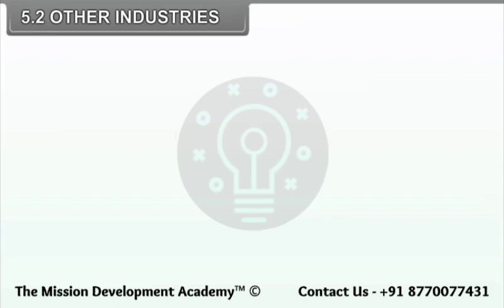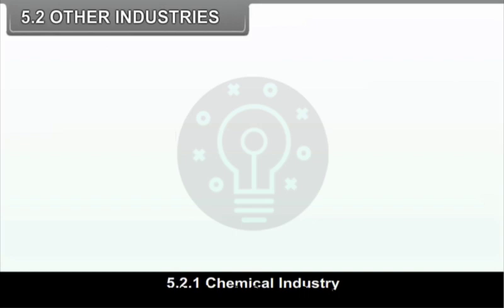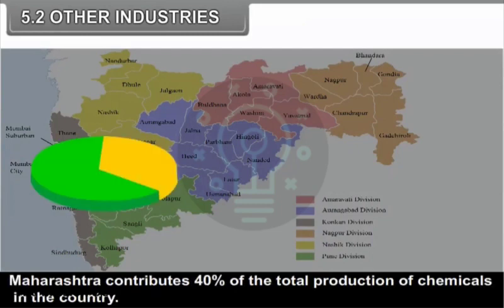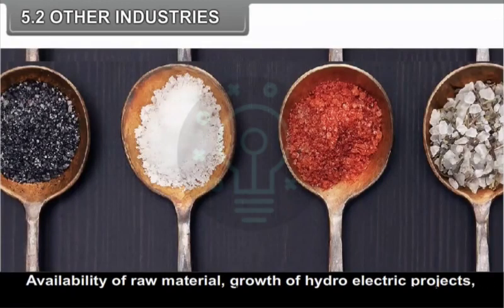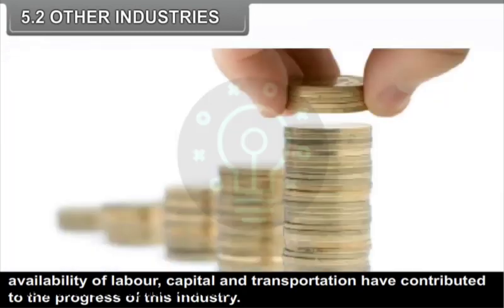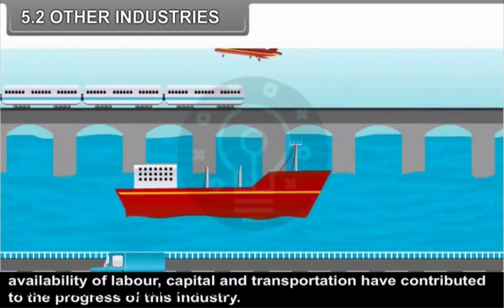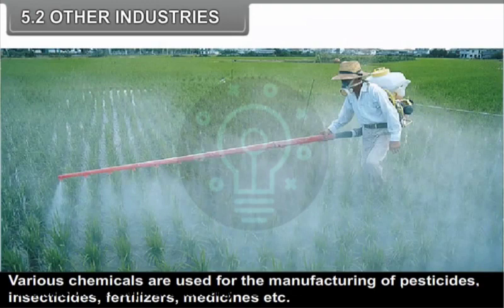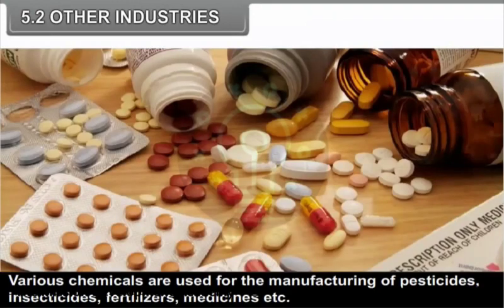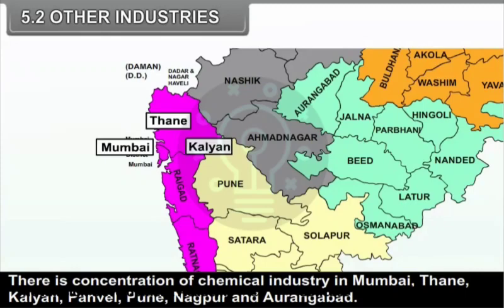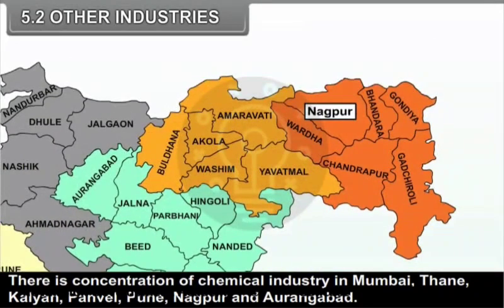Chemical industry is one of the most important industries of Maharashtra. Maharashtra contributes 40% of the total production of chemicals in the country. Availability of raw material, growth of hydroelectric projects, availability of labour, capital and transportation have contributed to the progress of this industry. Various chemicals are used for the manufacturing of pesticides, insecticides, fertilizers, medicines, etc. There is a concentration of chemical industry in Mumbai, Thane, Kalyan, Panvel, Pune, Nagpur and Aurangabad.